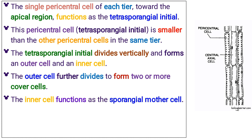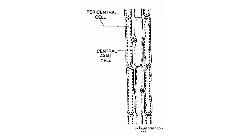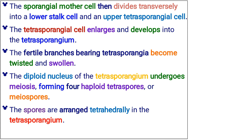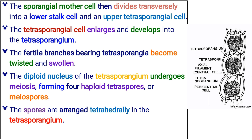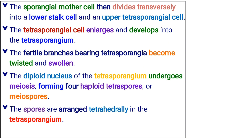The tetrasporangial initial is smaller than the other pericentral cells in the same tier. It divides vertically and forms an outer cell and an inner cell. The outer cell further divides to form two or more cover cells. The inner cell functions as the sporangial mother cell, which then divides transversely into a lower stalk cell and an upper tetrasporangial cell. The tetrasporangial cell enlarges and develops into the tetrasporangium. The fertile branches bearing tetrasporangia become twisted and swollen. The diploid nucleus of the tetrasporangium undergoes meiosis, forming four haploid tetraspores, or meiospores.